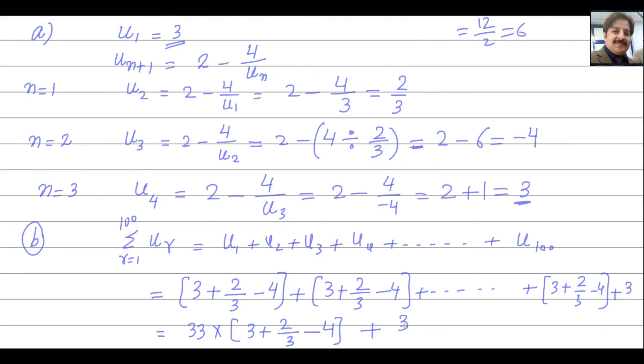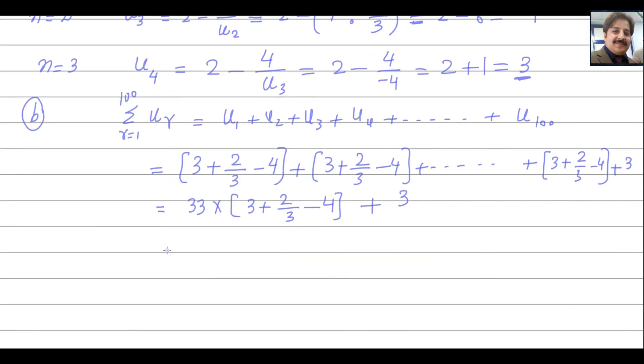Sum of 100 terms will be, you can use your calculator to solve it. It will be 33 into, you get the answer, then add 3. Answer is negative 1 over 3, and answer of this one will be negative 11 plus 3. And finally, the answer is negative 8. So this is the answer for question number 2.